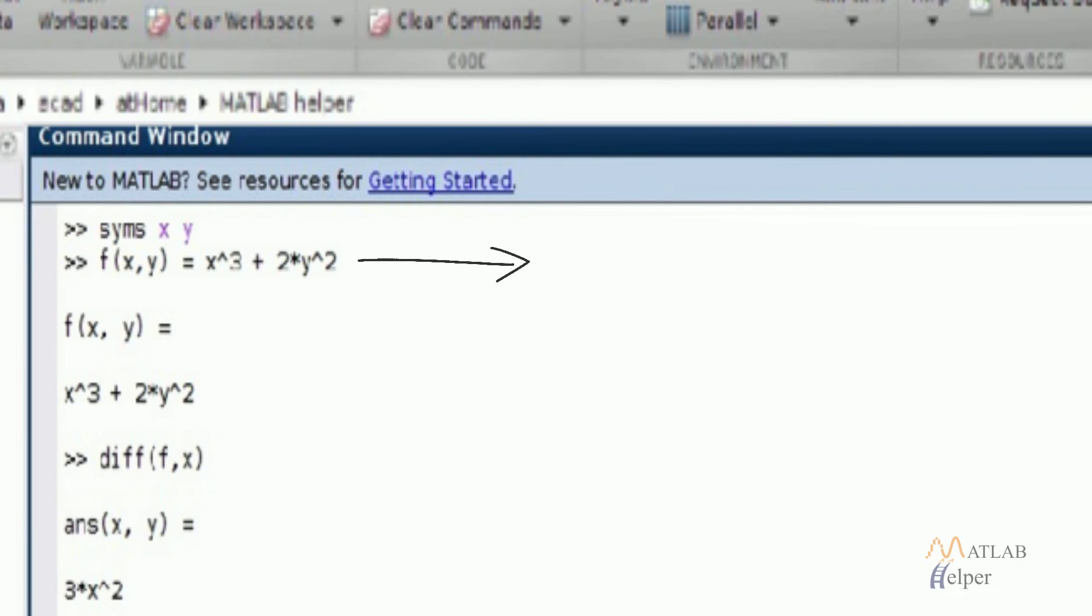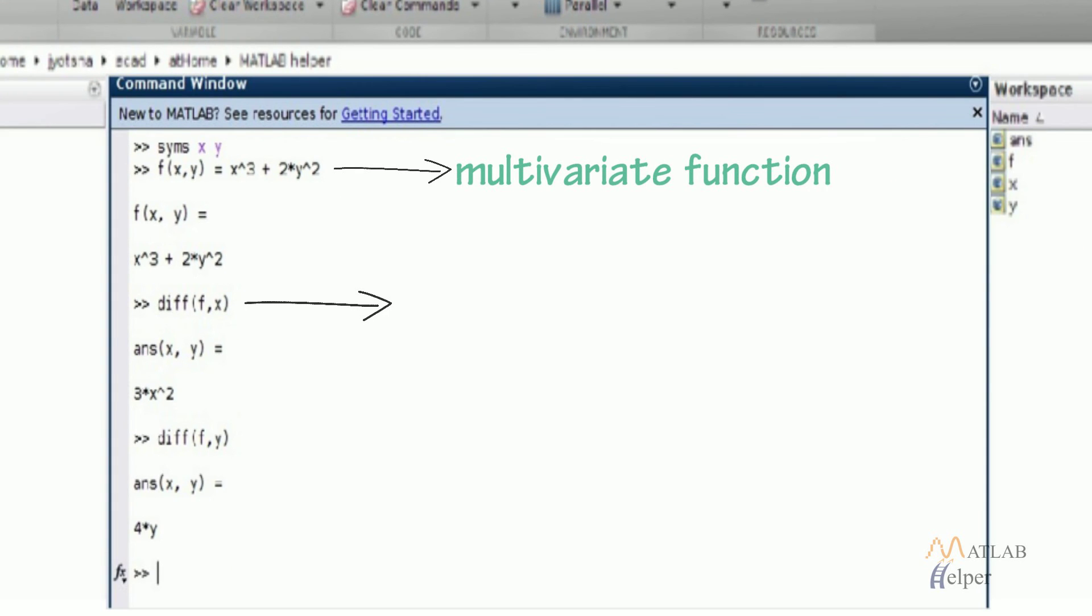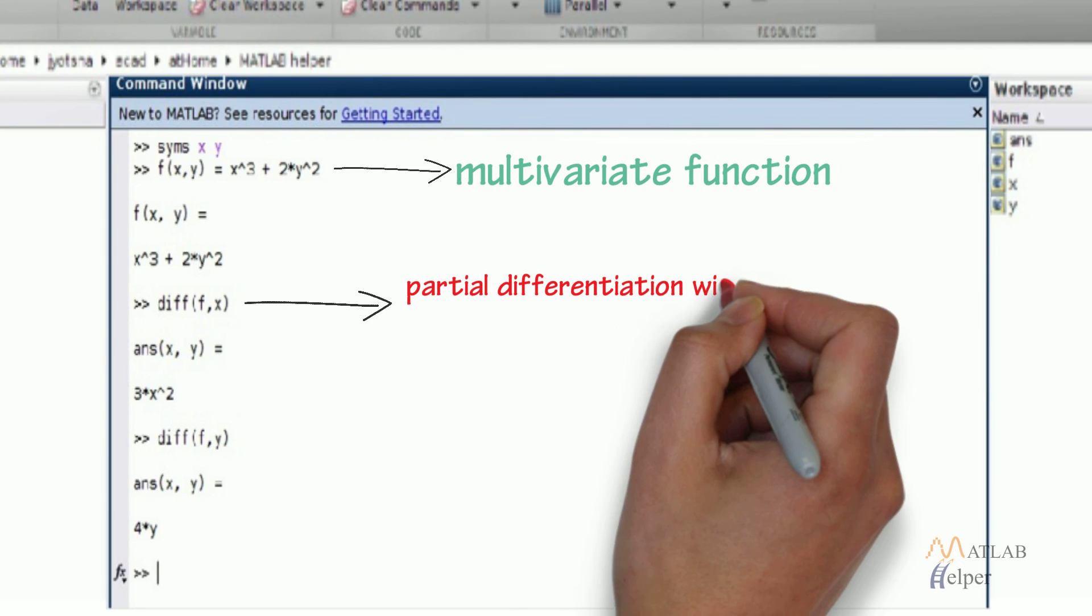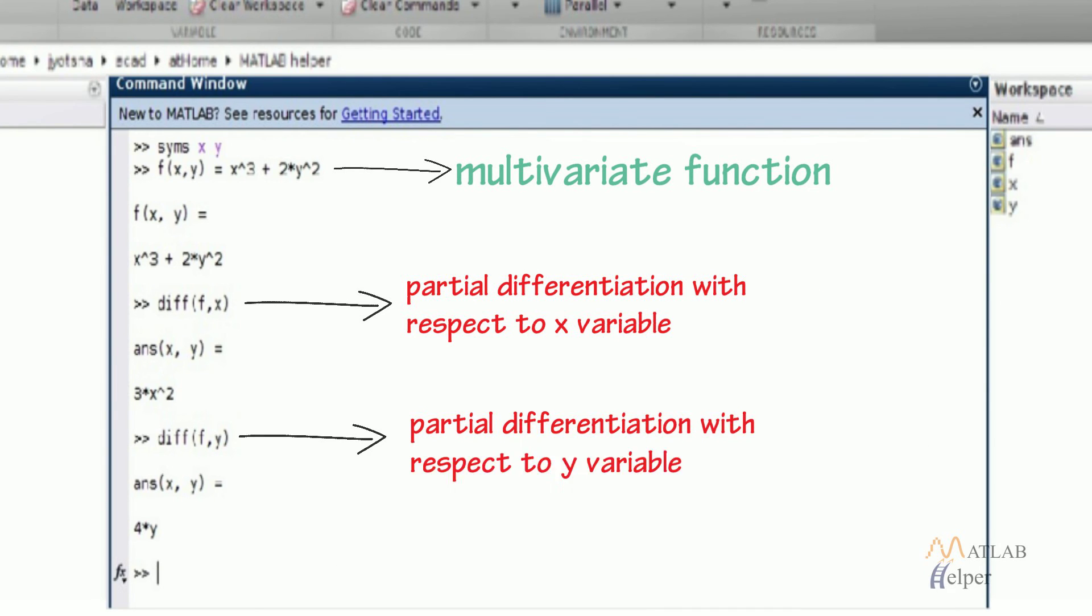If we have a multivariate function, then we can also perform partial differentiation by specifying the particular variable with respect to which the differentiation has to be performed, as shown in the picture.